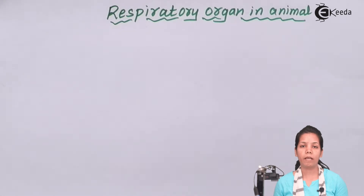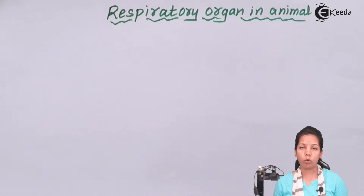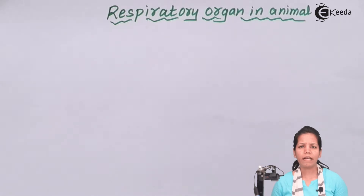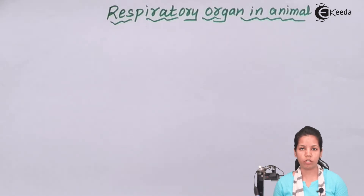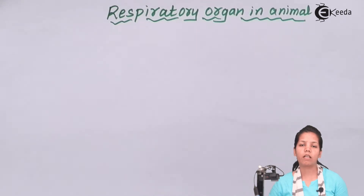How do these animals respirate? First, by using body surface respiration. When we talk about body surface respiration, protozoans and sponges do direct respiration using their body surface by the principle of diffusion — movement of a substance from higher to lower concentration.